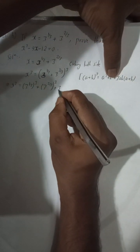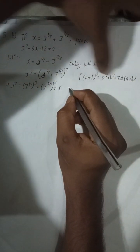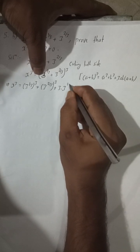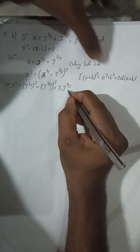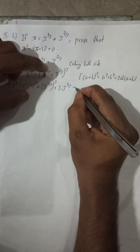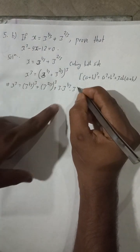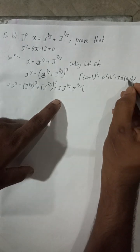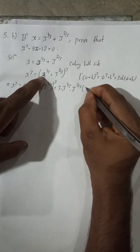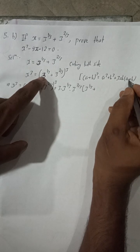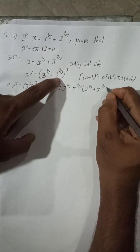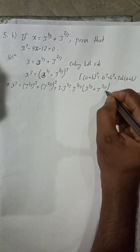...plus 3 times a, which is 3 to the power 1 by 3, times b, which is 3 to the power 2 by 3, times bracket a plus b — that is 3 to the power 1 by 3 plus 3 to the power 2 by 3.